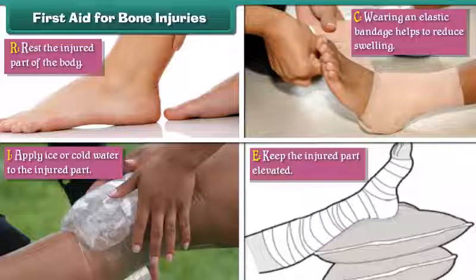R means rest the injured part of the body. I means apply ice or cold water to the injured part. C means wearing an elastic bandage helps to reduce swelling. E means keep the injured part elevated.